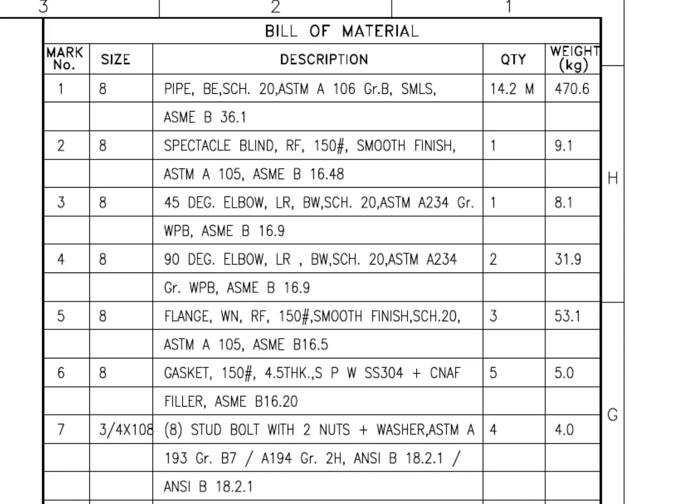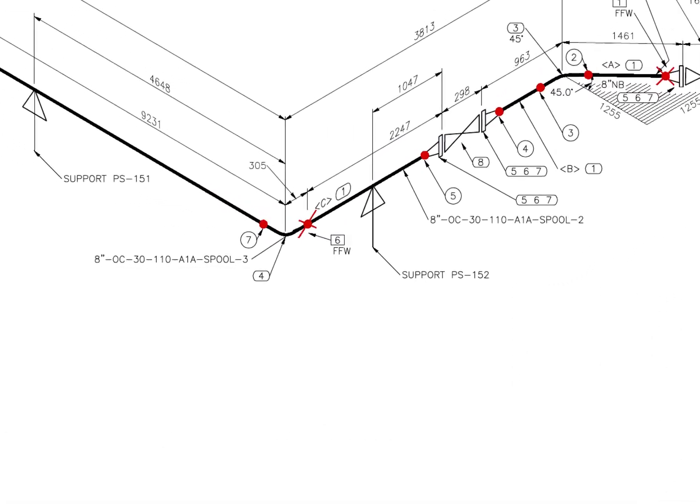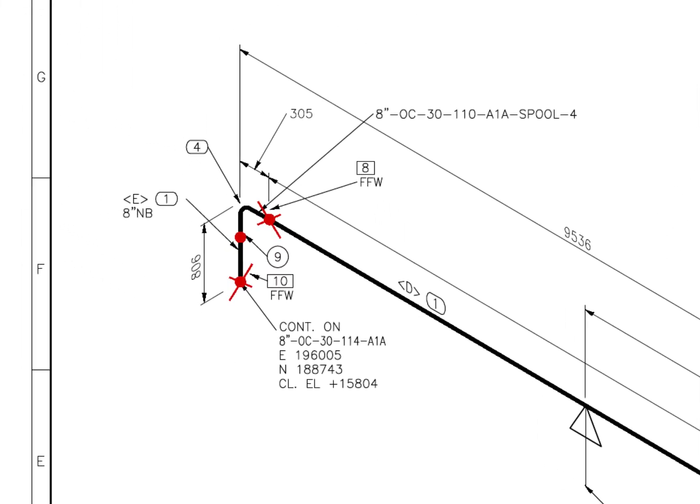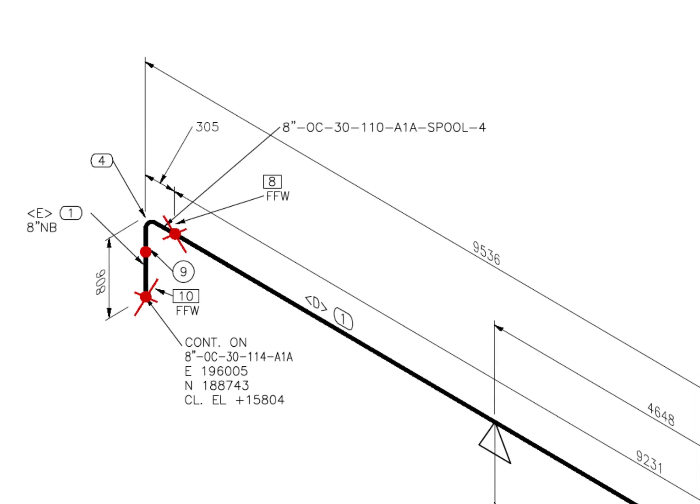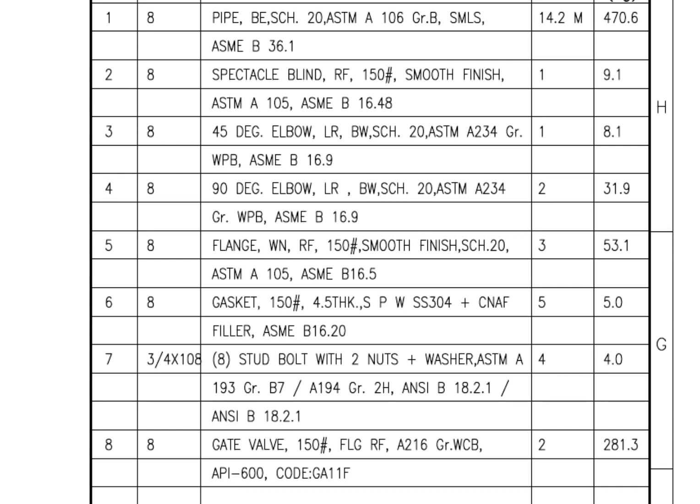Let us check what are the adjacent fittings. Item number 4, look for what is on the other end. Both are the same item. Let us check the material list: 90 degree elbow, long radius, butt weld, schedule 20, and the size is 8 inch.